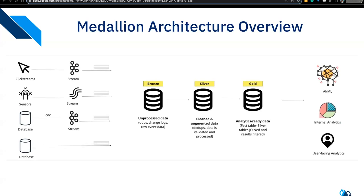When you look up what the medallion architecture looks like, you get a high-level architecture that seems simple to implement. Data is ingested unprocessed and stored in a data lake. In the raw or bronze layer you'll have data duplication, a change log, raw events — data is unstructured, not processed, no transformation. You're just bulk loading and sending it there.